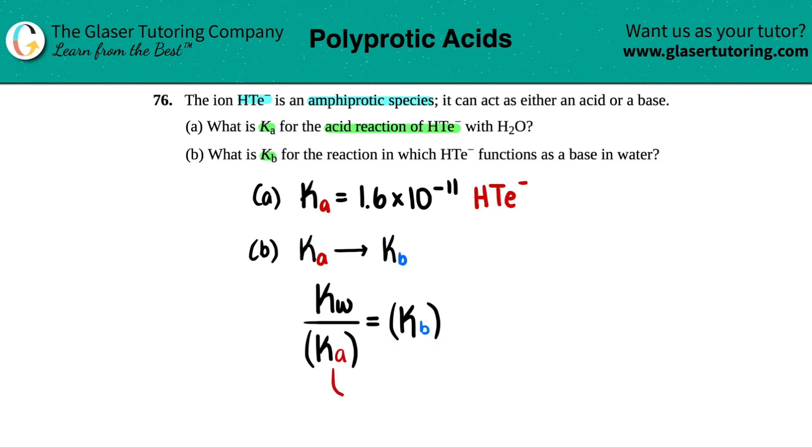Now, the Ka value is what we just found, right, from the charts, 1.6 times 10 to the negative 11th. And since we used a chart in the back of a textbook, that means we were at room temperature. So we should know the room temperature KW value. W stands for water. That's always 1.0 times 10 to the negative 14th. So now we know the two numbers. Let's just plug it in.